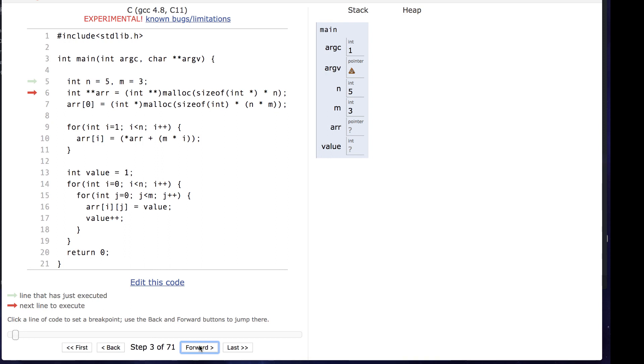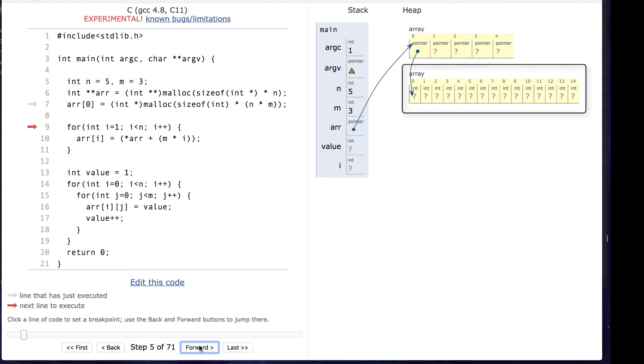This involves still creating an array of integer pointers. But instead of a loop that creates each row independently, we make one call to malloc to create an n by m integer array, or an array of size 15.